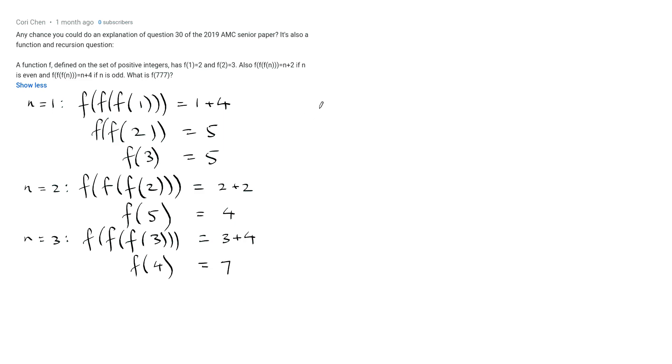Alright, so once I sort of got the hang of that, what I started doing was writing them down just like 1 maps to 2. So this notation you may not have seen before, it's sort of an arrow with a little vertical line on the end, which is the same thing as saying f of 1 is 2. So 1 maps to 2, 2 maps to 3, 3 maps to 5, 5 maps to 4, 4 maps to 7.